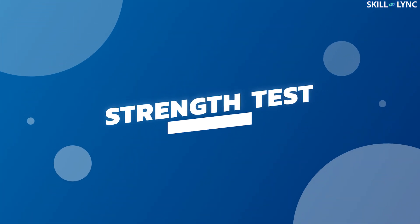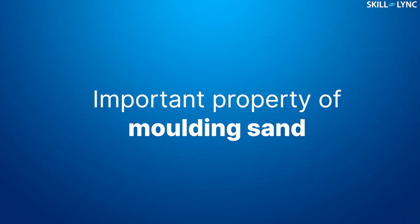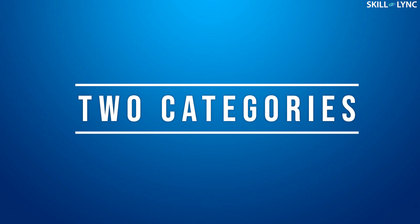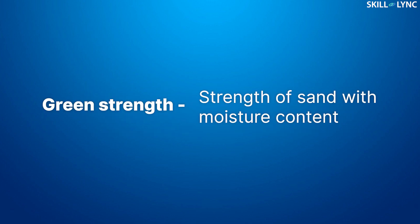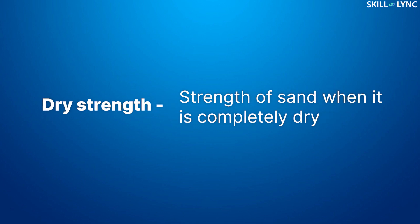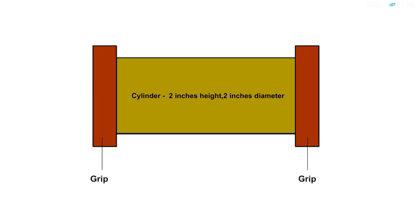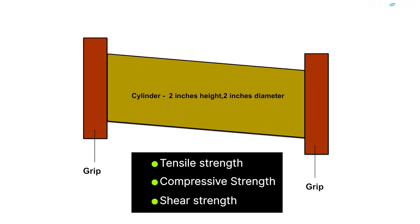The next test is the strength test. The strength or cohesiveness is an important property of molding sand, and the molding sand must possess sufficient strength to provide the desired casting. Strength is classified into two categories: green strength, which is the strength of the sand when moisture is present, and dry strength, which is the strength when the sand is completely dry. The test is performed using a standard cylindrical specimen 2 inches in height and 2 inches in diameter. Grips are attached to each side and moved to determine the tensile strength, compressive strength, and shear strength of the sand.